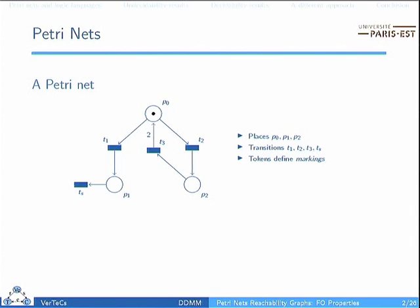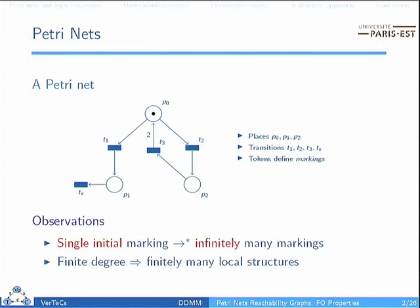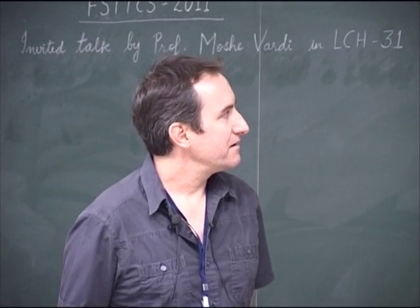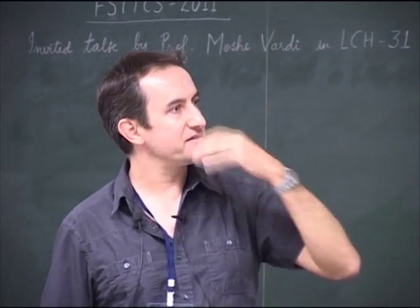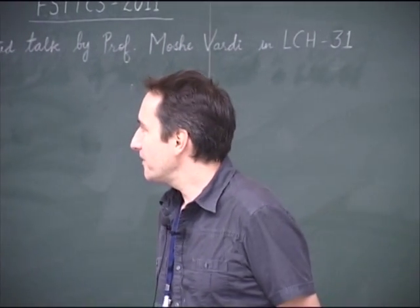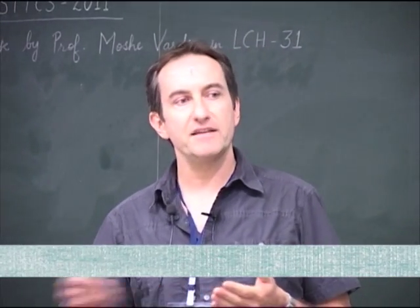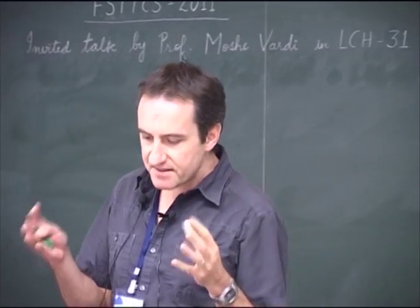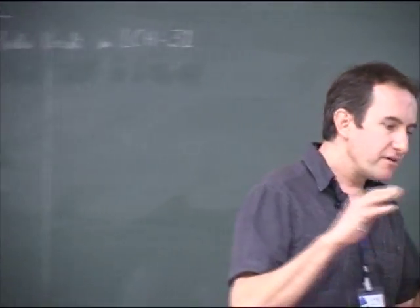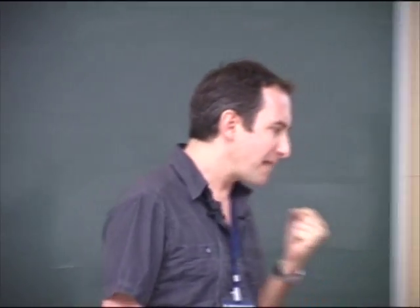From this definition, we may make a few observations. From an initial marking, usually an infinite set of markings may be reached, so it's a kind of general structure with infinite behavior. But from a local point of view, it has only finite degree — from every marking, you have only finitely many enabled transitions, since there are only finitely many transitions in the PetriNet. So in some sense, it might be reasonable to characterize this finite structure.